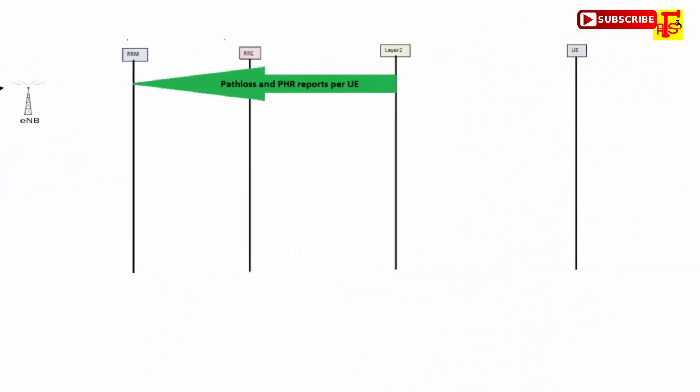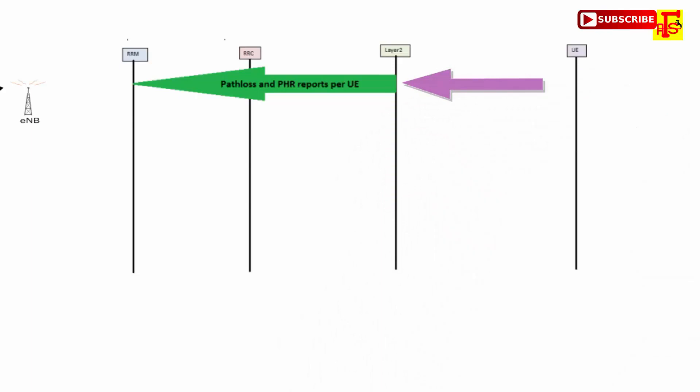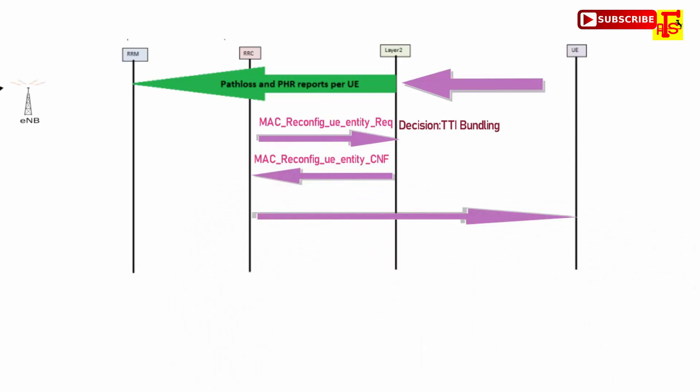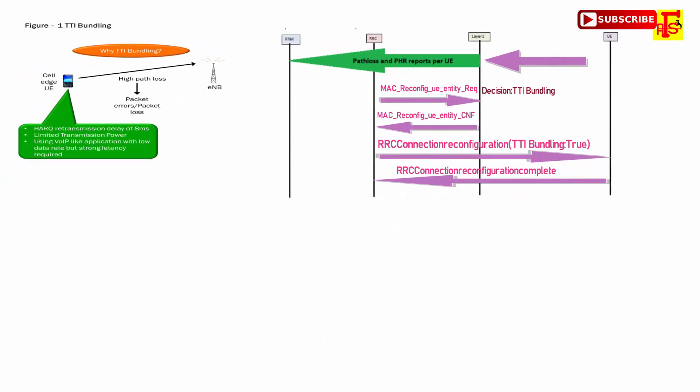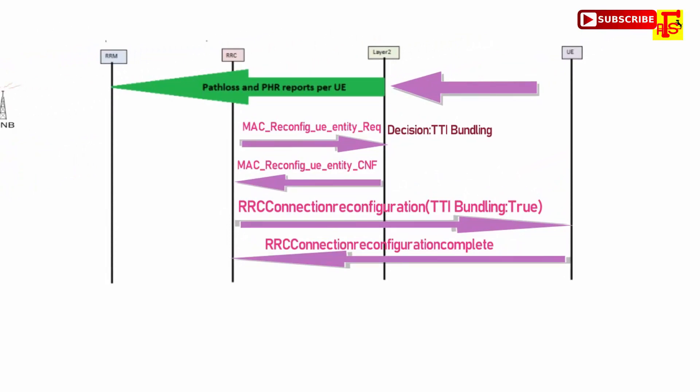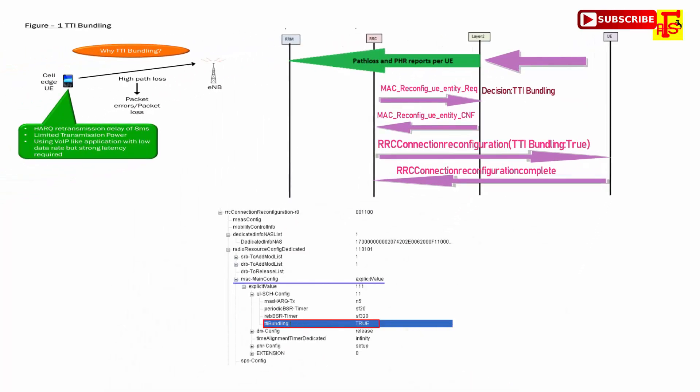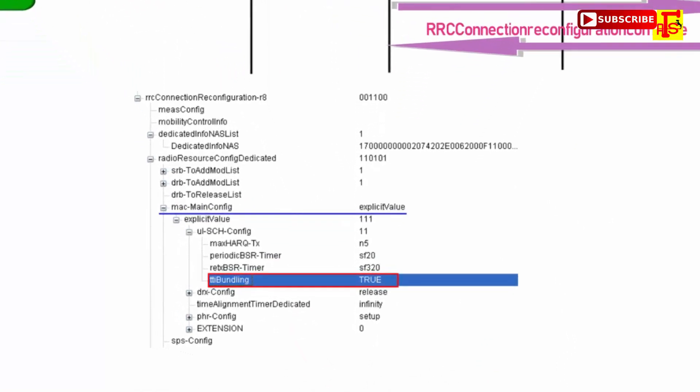Here we can see this call flow: UE reports the path loss and PHR report to eNodeB MAC layer, and TTI bundling decision, enabled or disabled, would be taken by RRM based on the path loss and PHR report received from eNodeB MAC layer. RRM will take the decision to enable the TTI or disable the TTI. So RRM sends this information to RRC. RRC sends internal message to MAC layer and asks to enable the TTI bundling. After getting the confirmation from the MAC, RRC will initiate the RRC reconfiguration message to UE with TTI enabled or disabled. Once it gets the confirmation from MAC layer, yes, it can be enabled. So confirmation will be okay, then the RRC connection reconfiguration will be enabled.